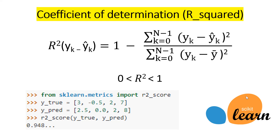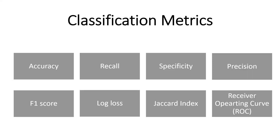We also have the Coefficient of Determination, generally used to evaluate the performance of a single model. The Coefficient of Determination is always between zero and one, whereas the other metrics we have seen have a range from zero to infinity. The key difference is that for MSE, MAE, and MSLE the lower the value the better the model, but for the Coefficient of Determination the closer the value is to one, the better the model.